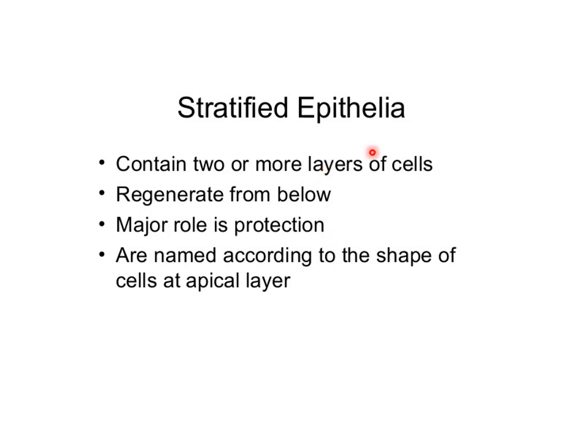Stratified epithelium consists of two or more layers of cells and regenerates from the basal layer. Its major role is protection. The nomenclature of stratified epithelia is according to the shape of the apical surface layer — if the apical layer consists of squamous cells we call it stratified squamous, cuboidal cells give stratified cuboidal, and columnar cells give stratified columnar epithelium.